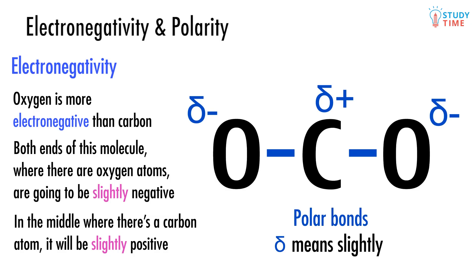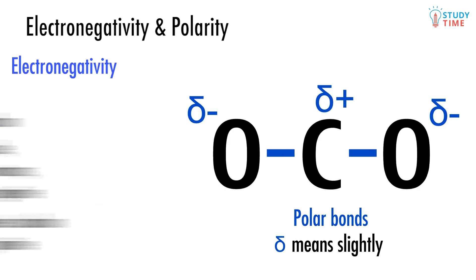So CO2 has polar bonds because of the electronegativity differences between the carbon and the two oxygen atoms. Not only do some molecules have polar bonds, but they also have something called a net dipole, which means that it's possible for the entire molecule to be polar.